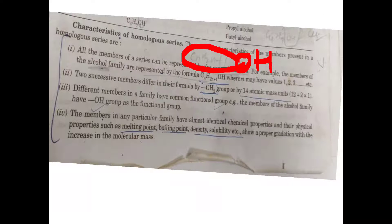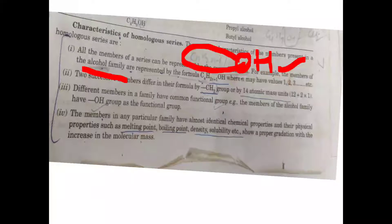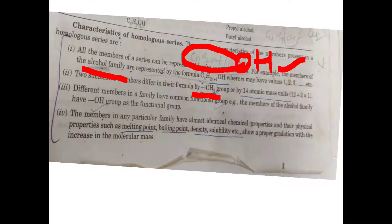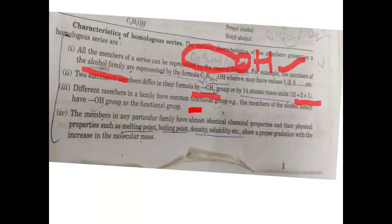Where N may be any value — 1, 2, 3. If you have to discuss all the members represented by the general formula, for example members of the alcohol family, you write the OH group. Two successive members differ in their formula by a CH2 group. If you consider its mass — carbon is 12, hydrogen is 2 — so 12 plus 2 is 14 grams. So different members in a family have common functional groups.